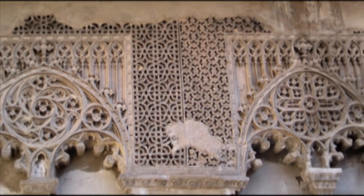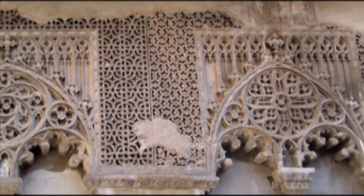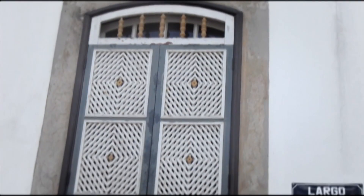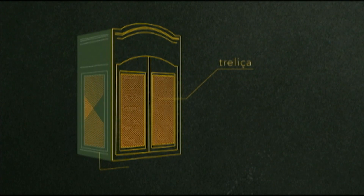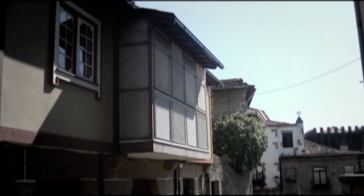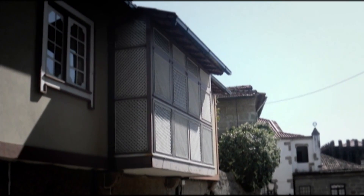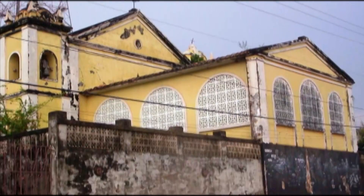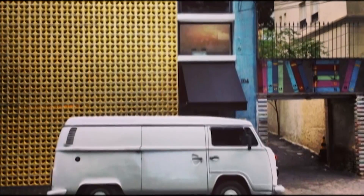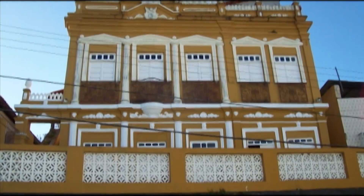O Cobogó tem a sua origem desde a arquitetura Moura, que foi para Portugal, e que foi bastante difundida — o que a gente pode verificar principalmente nas treliças, nos charabins da arquitetura colonial. O nosso clima tropical é bastante adequado. Não é à toa que ele é tido como uma invenção pernambucana.